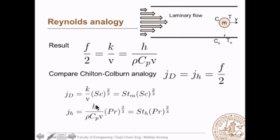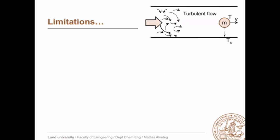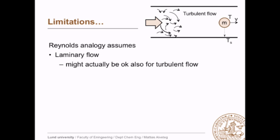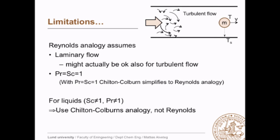k/v and h/(rho*cp*v) are often called the Stanton number — k/v is the Stanton number for mass, and h/(rho*cp*v) is the Stanton number for heat. There are certain limitations: Reynolds' analogy assumes laminar flow, but it might be okay also for turbulent flow. Reynolds' analogy also assumes Pr equals Sc equals 1, so if you have liquids, for example, you should use Chilton-Coburn's analogy and not Reynolds' analogy.